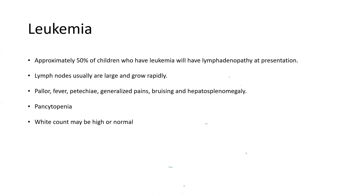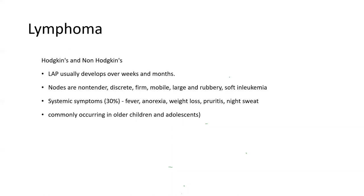Approximately 50% of children with leukemia will have lymphadenopathy at presentation. Lymph nodes are usually large and grow rapidly. The child might have pallor, fever, petechiae, generalized pains, bruising, and hepatosplenomegaly. There may be a picture of pancytopenia; white counts may be high or normal.